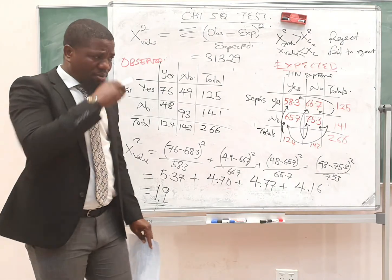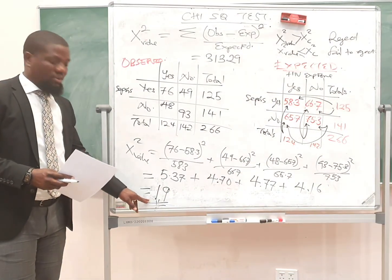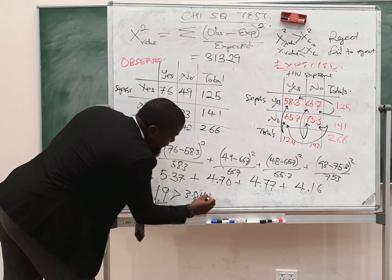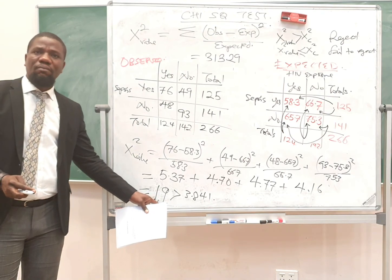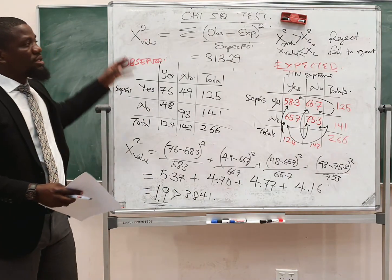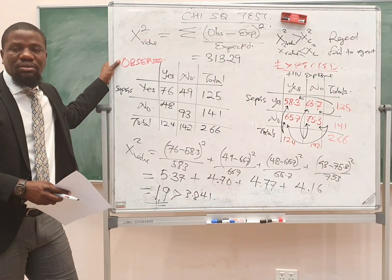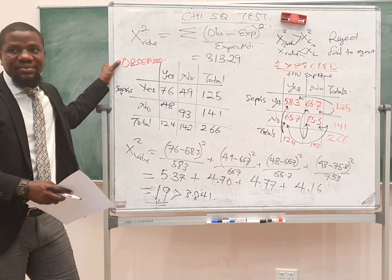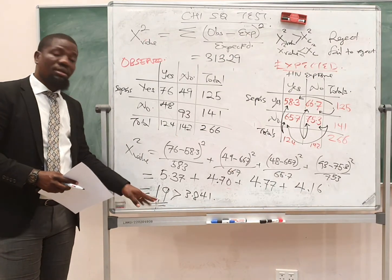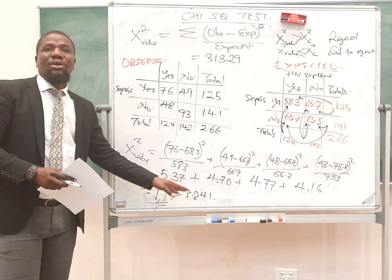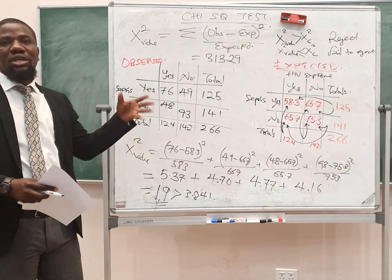Our null hypothesis is that there is no association. So when you look at our situation, 19 is greater than 3.841. So what conclusion do we make at alpha equal to 0.05? We reject the null hypothesis that there is no association between HIV exposure and sepsis. On the other hand, if the chi value calculated is less than 3.841, we fail to reject the null hypothesis — meaning there is no association between HIV exposure and sepsis.